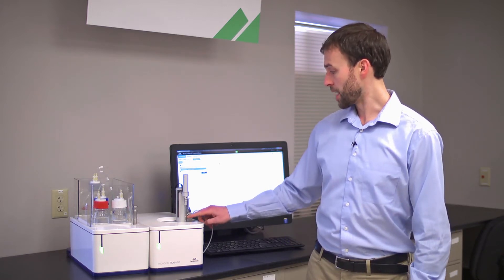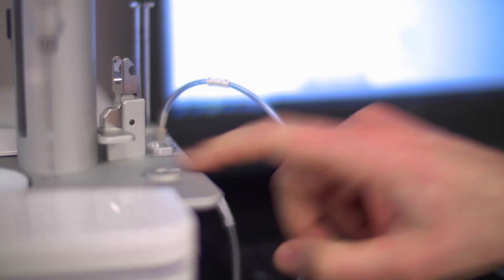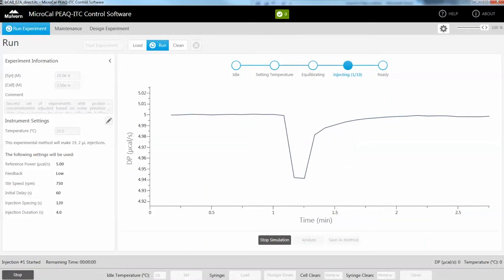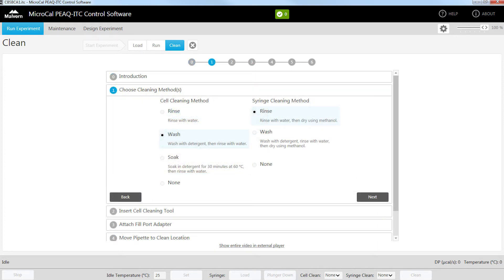There is also a latching mechanism to ensure a good seal during routine syringe cleaning and maintenance. The most noticeable change, however, is the all-new instrument control software and data analysis package. The instrument control software offers guided workflows with step-by-step help videos and maintenance alerts, making the MicroCal PEAQ ITC perfect for a multi-user environment and ideal for either novice or expert users.